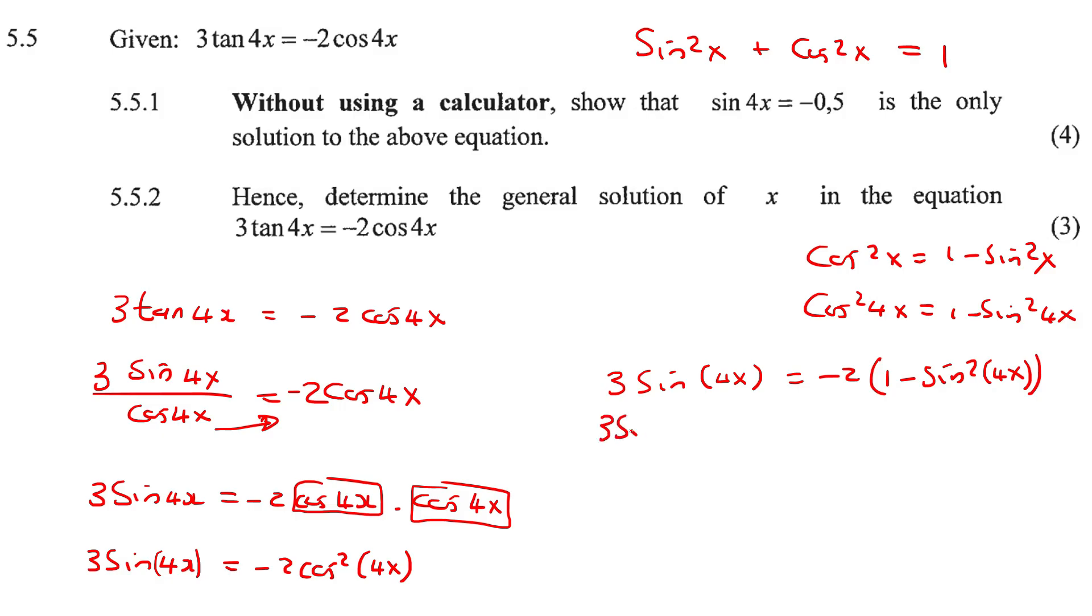Okay, now we're just going to simplify a little bit. This will become a plus 2 sin squared 4x. And now I'm just going to take everything to the right hand side because I can see there's a trinomial that is developing. So you should see that as a trinomial.